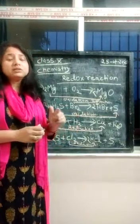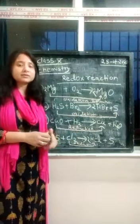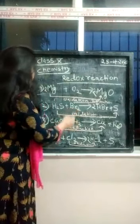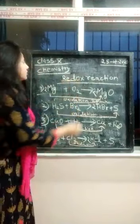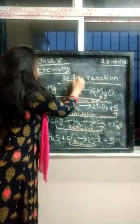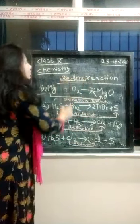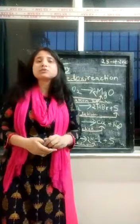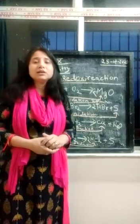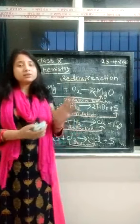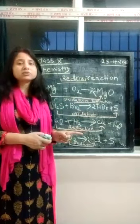That's right. This kind of reaction — where oxidation and reduction occur simultaneously together — is known as a redox reaction. Red is from reduction, and ox is from oxidation. Oxidation and reduction occurring together — that is the redox reaction.